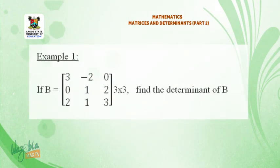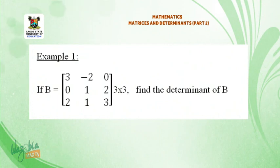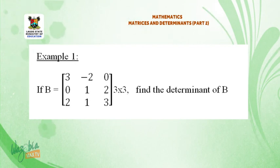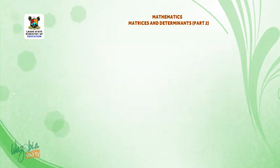Example. If B is equal to the matrix: 3, minus 2, 0, 0, 1, 2, 2, 1, 3 — find the determinant of B.